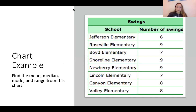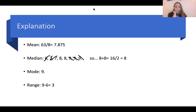Here's another example for you to try on your own. Find the mean, median, mode, and range from this chart. Pause the video to try it yourself, but I'll give you an explanation. From counting up the total sum, we got 63. We divide by 8 because that was the total number of values on the chart. Our average mean is 7.875.